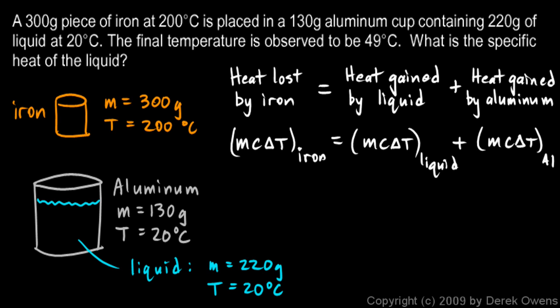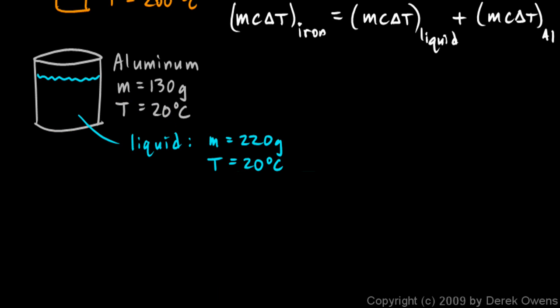And we can put in the numbers. The mass of the iron is 300, starting over here on the left side. I'm going to scroll down where I have a little more room to write the equation. The mass of the iron is 300. The specific heat of the iron is 0.11, and the delta T for the iron—the iron starts at 200, and it cools down to 49. We're given the final temperature. So we can just do that calculation. 200 cooling down to 49. That's a delta T of 151 degrees.